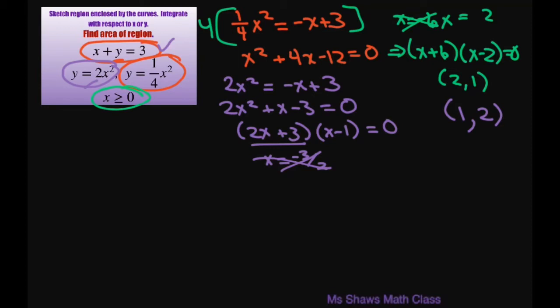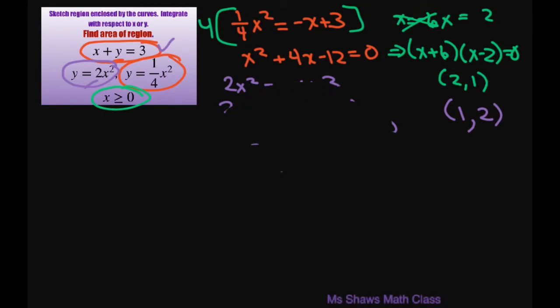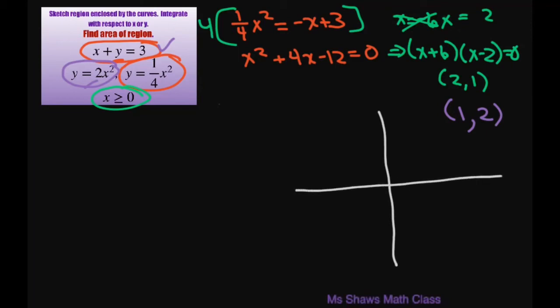Now that we have that, let's go ahead and sketch the graphs. Let me just go ahead and write the intersection points: (1, 2) and (2, 1). Those are going to be the intersection points, and that's going to help us sketch it.